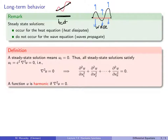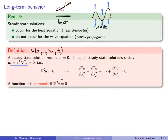Formally, a steady state solution means that the time derivative is equal to zero. I'm assuming u is a function of up to n spatial variables and time. So all steady state solutions satisfy the equation where we set the time derivative to zero in the heat equation. Dividing through by c squared, we get that the Laplacian of u equals zero — the sum of the second derivatives is equal to zero.